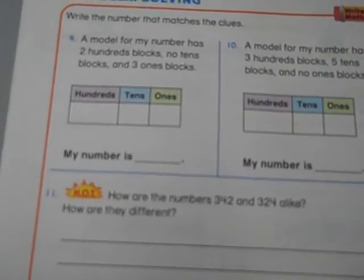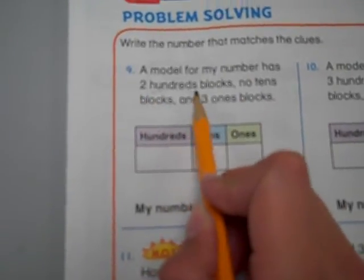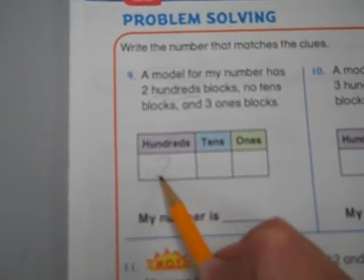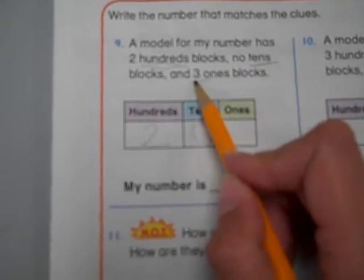When you're finished, let's move on to the problem solving page. Number 9. A model for my number has two hundreds blocks, no tens blocks, and three ones blocks. How am I going to write that? Well, let's look at the clues. Two hundreds blocks. So I need to write a 2 right here. No tens blocks. That means they're 0. And three ones blocks. My number is going to be two hundred and three.